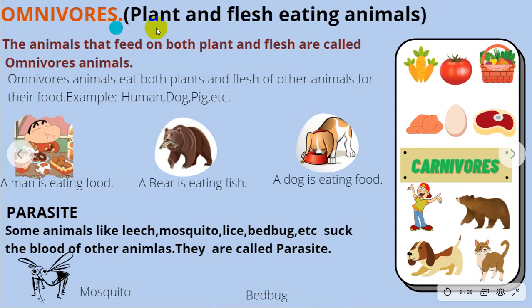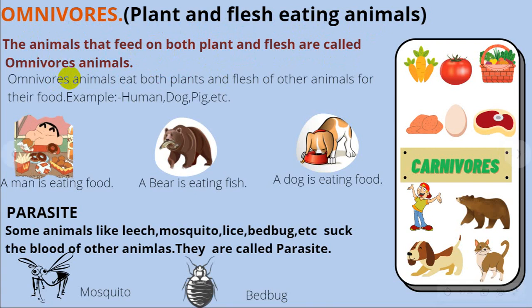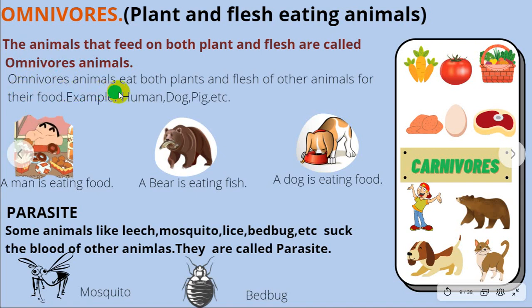Omnivorous — plant and flesh eating animals. The animals that feed on both plants and flesh are called omnivorous animals. Omnivorous animals eat both plants and flesh of other animals for their food.